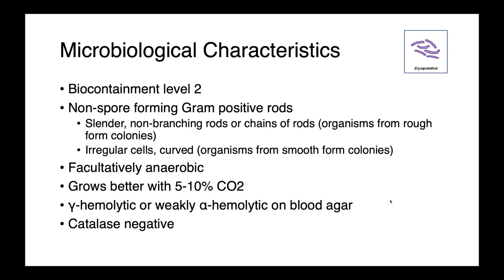This is a genus of biosafety level 2 organisms. They are non-spore-forming, gram-positive rods, as you can see in the cartoon here. They're slender and non-branching, and they may form chains on gram stain. Colonies vary from really irregular to very smooth, and you'll see in the next slide what these colonies look like and how that colony morphology relates to the morphology of the individual cells.